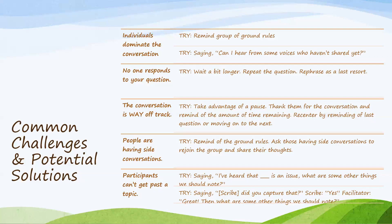If people are having side conversations, try reminding them of the ground rules and asking those individuals to rejoin the group and share their thoughts. If participants can't seem to get past a particular topic, try saying 'I've heard that blank is an issue—what are some other things we should note?' Or confirm with your scribe that they captured the information and then say 'Great! What are some other things we should note?' Having some of these phrases in your back pocket can help you navigate these situations.